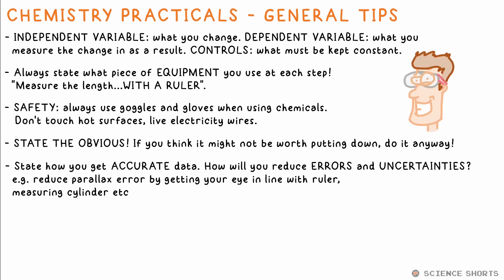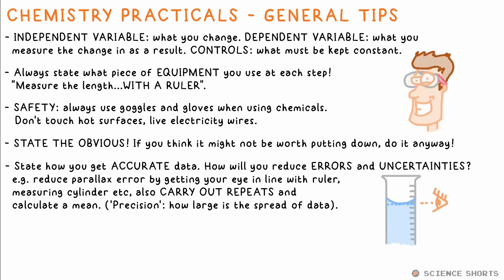Talk about the accuracy of measurements. How will you reduce errors and uncertainties? For example, get your eye in line with the measurement when using a ruler or measuring cylinder to reduce parallax error. Another classic thing to put down is multiple or repeat measurements or readings to calculate a mean from.